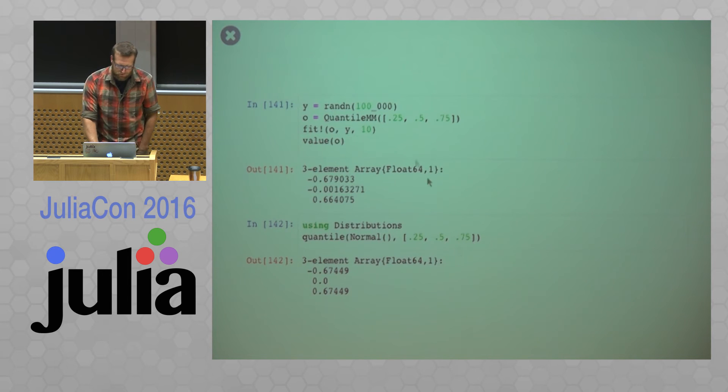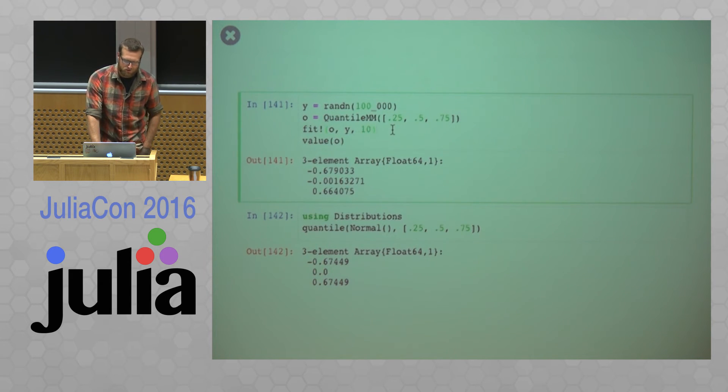And so I'm using this algorithm to implement quantiles. So here is just a very quick example showing how this works. So I'm generating 100,000 random normals. I'm using the quantile MM type to get 0.25, 0.5, and 0.75 quantiles. I'm giving it a batch size of 10 to run through this. And then we can see that it's getting fairly close to the truth of the normal distribution there.